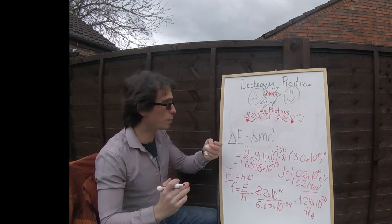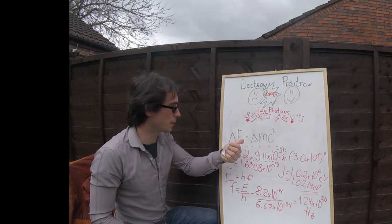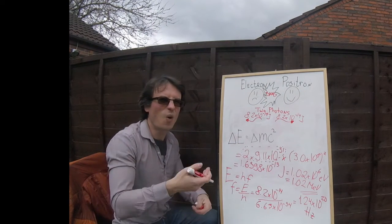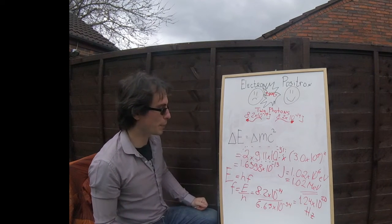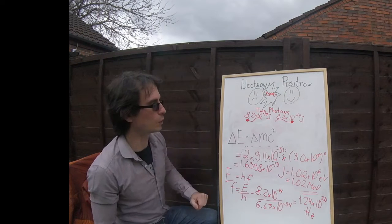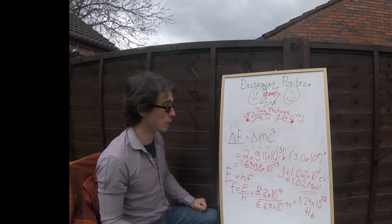This whole process produces energy because of delta E is equal to delta mc squared. Or more accurately said, the mass gets converted to pure energy in the form of photons. There are two of them due to conservation of momentum.